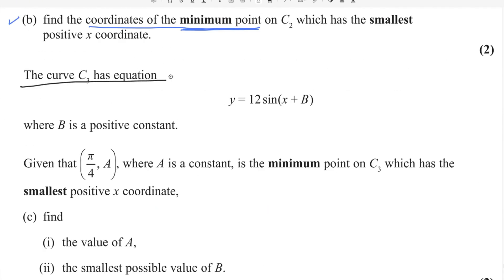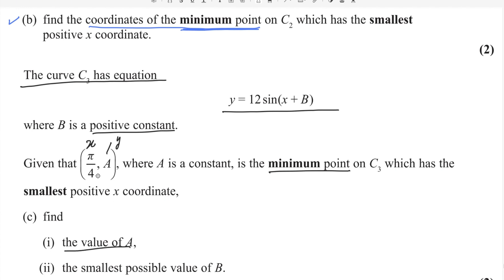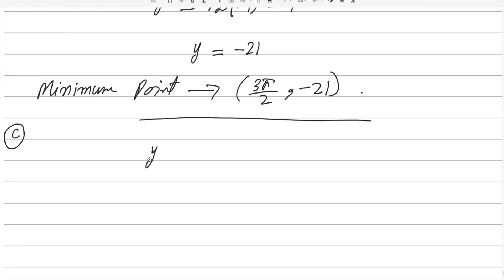Now for the last part: curve C3 has equation y equals 12 sin x plus b, where b is a positive constant. Given that (π/4, a), where a is a constant, is the minimum point on C3 with the smallest positive x-coordinate, find the value of a.